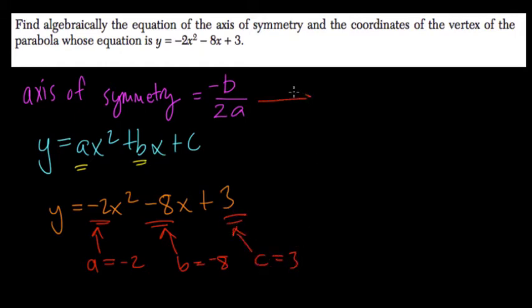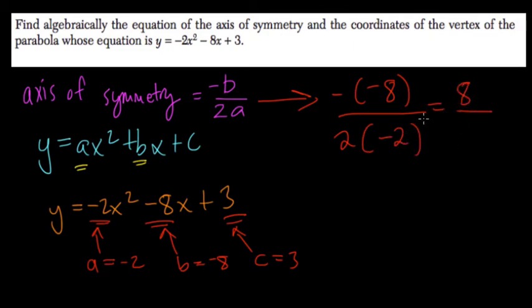So that means that our axis of symmetry is negative b, negative negative 8, over 2 times negative 2. And what's that? Well, negative negative 8 is 8, over 2 times negative 2 is negative 4. Finally, our axis equals negative 2. And I'll write x equals negative 2.